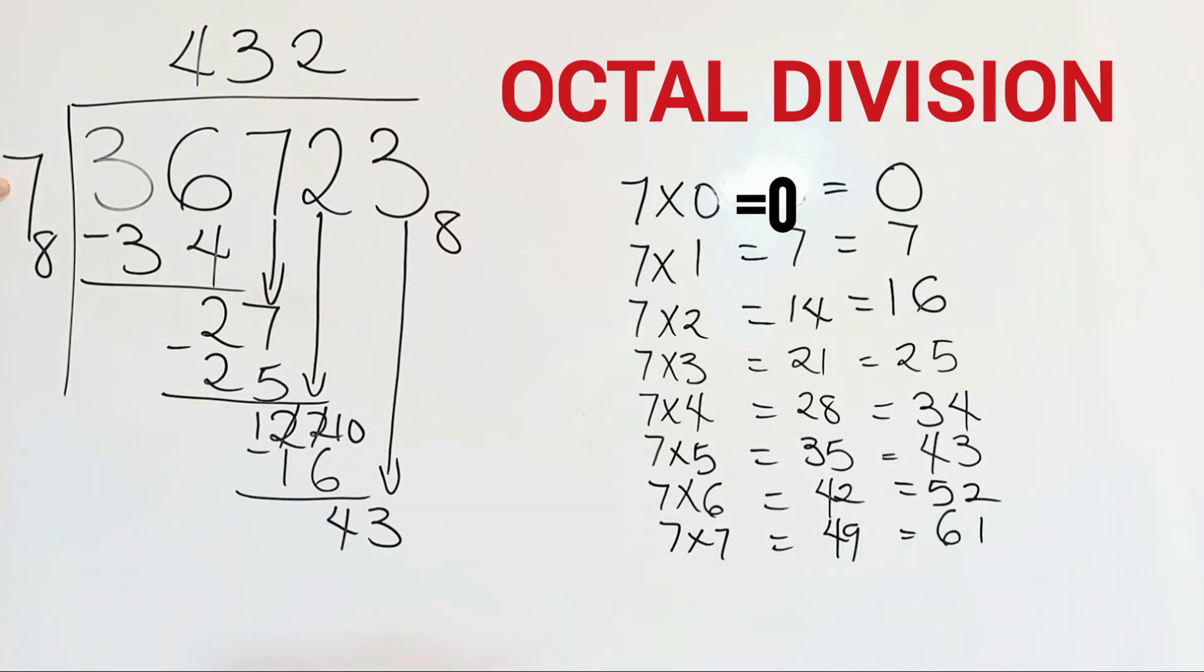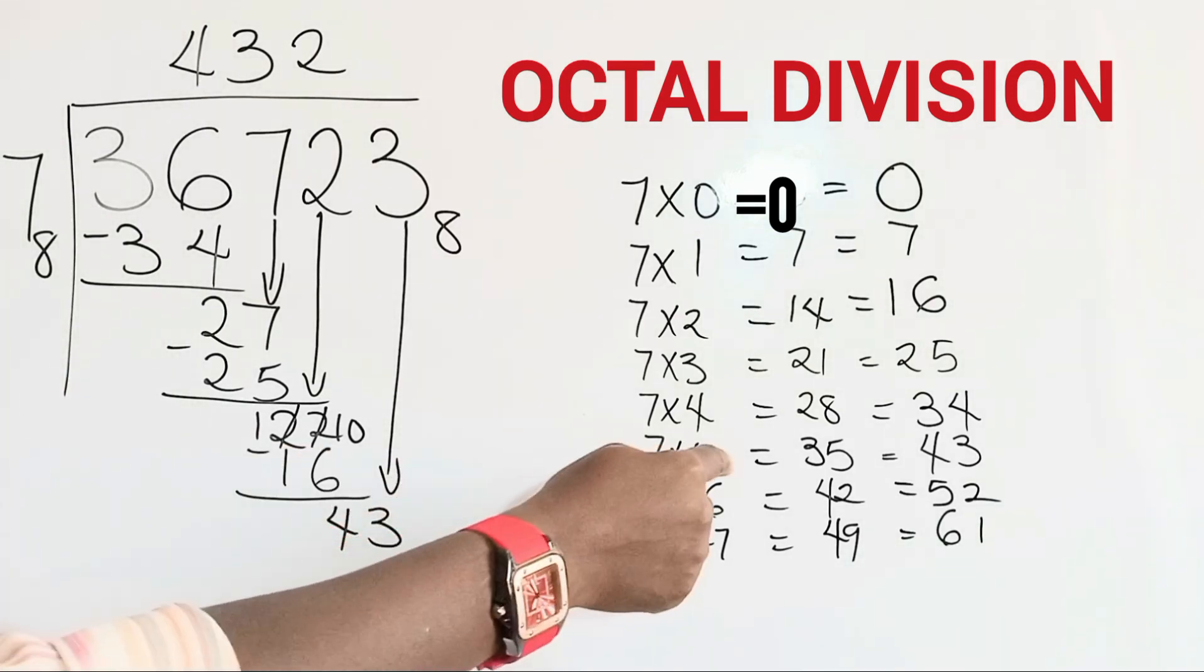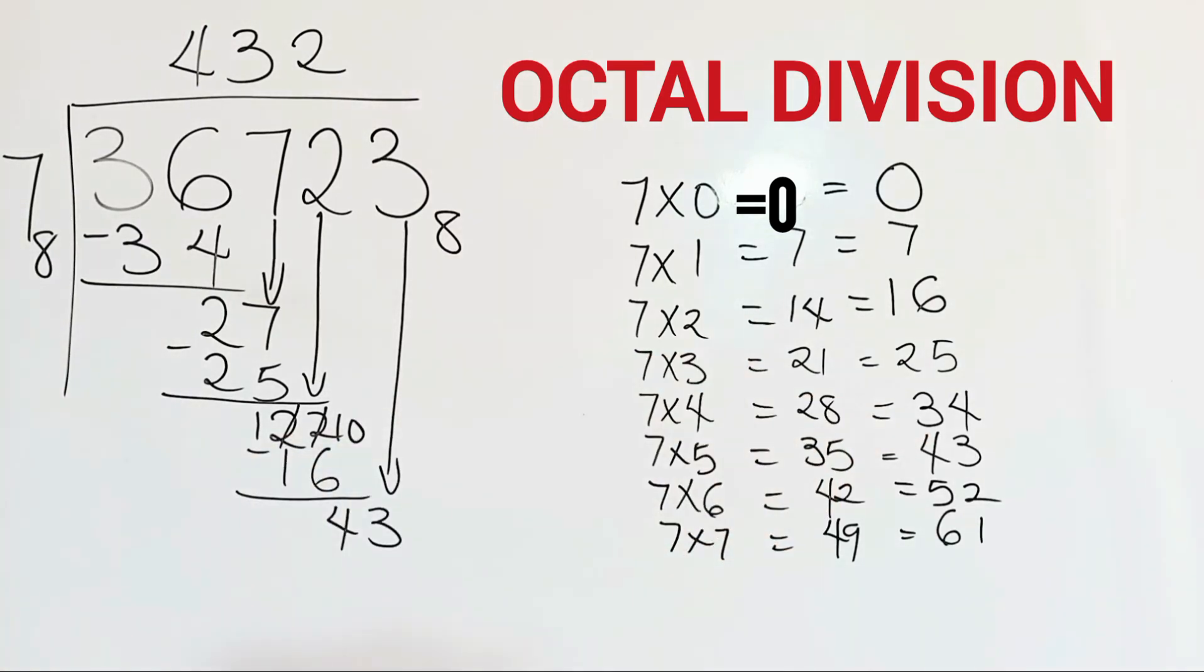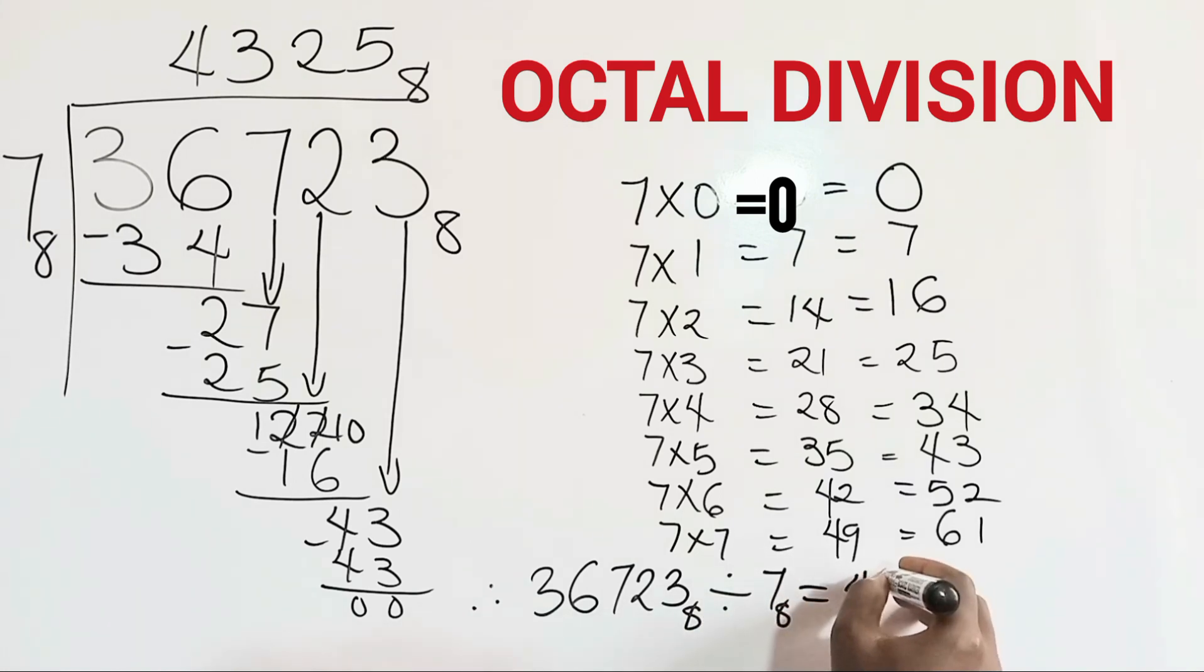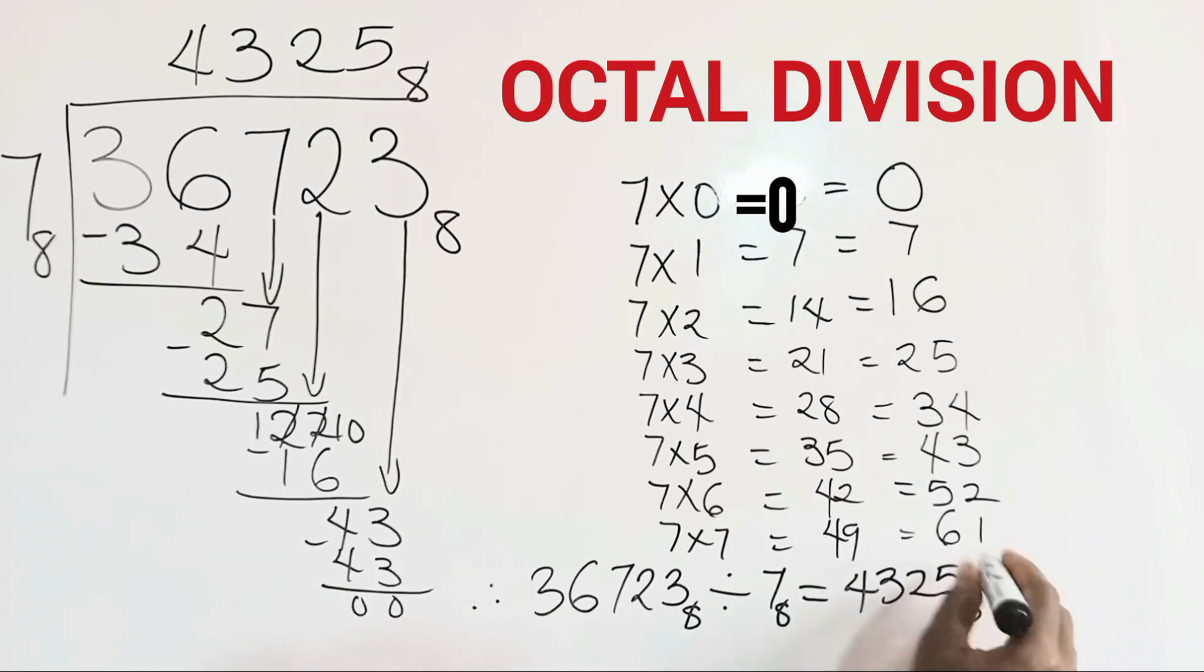And then we divide 43 by 7. On our list here, we have 7 times 5 equals 43. So we have 5 here. 5 times 7 will give us 43. And we subtract. We have 0, 0. Now that we have obtained 0, we are through with our division. Therefore, 36723 in base 8 divided by 7 in base 8 equals 4325 in base 8.